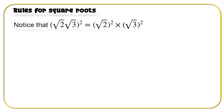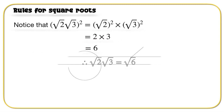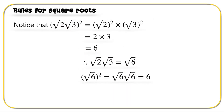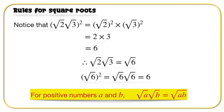Here's another rule for square roots. Notice that (root 2 times root 3) all squared is the same as root 2 squared times root 3 squared. Root 2 squared is 2 and root 3 squared is 3, giving a value of 6. Alternatively, root 2 times root 3 can be written as root 6, and root 6 squared equals 6. So for all positive values A and B: root A times root B equals root of (A times B). Pause the video and write that down.